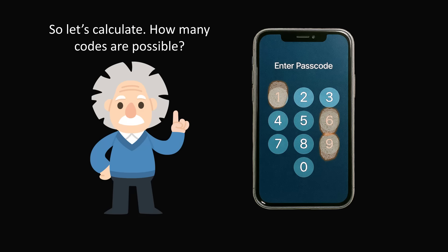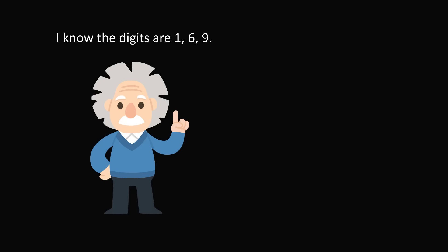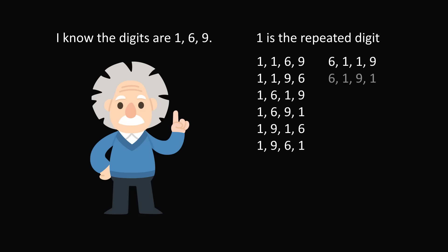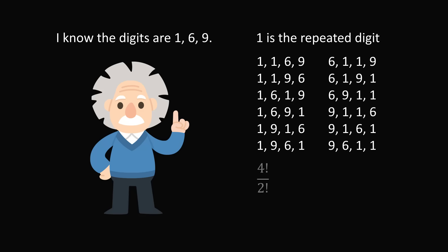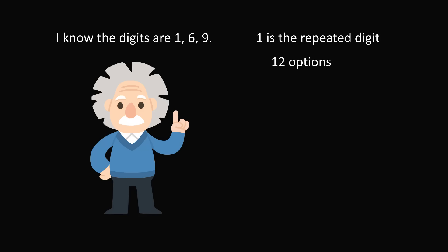Let's do a calculation to figure out how many codes are possible. So let's say I know the digits are 1, 6, and 9. Let's first suppose that the digit 1 is repeated. So one possibility is 1, 1, 6, 9. Another possibility is 1, 1, 9, 6. We can enumerate all of the different possibilities where the 1 is repeated two times. When you enumerate all the possibilities, there will be a total of 12 — we have four factorial ways to order four items, but we divide by 2 factorial because the 1 is repeated two times. This simplifies to 12 ways. So if the digit 1 is repeated, there are 12 different options for the passcode.